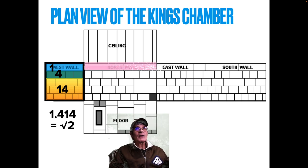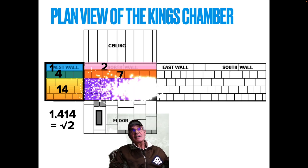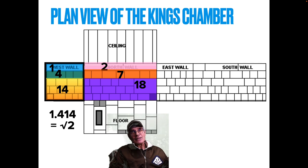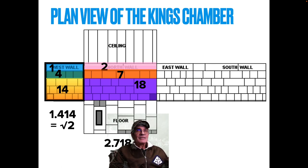On the north wall you've got two blocks in the top course, then the second row has seven blocks, and then rows 3, 4, and 5 have 18. There it is again: 2.718. That's the Euler constant, used for so many things in industry, compound interest, and other applications.